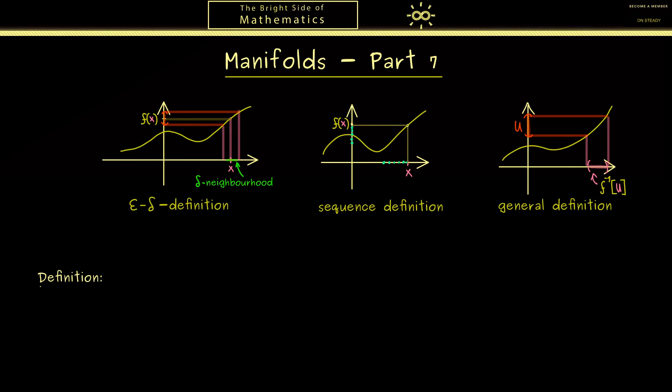Now the pictures from above with the graphs are not suitable anymore because we have two abstract topological spaces. And there let's call the first one (X,Tx). So we have a set X together with a topology Tx, and the second one should be a set Y together with a topology Ty.